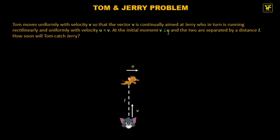So here v is greater than u, so surely Tom will catch Jerry at some instant. We have to find in how much time he will catch it.